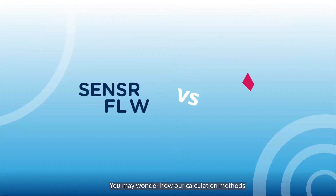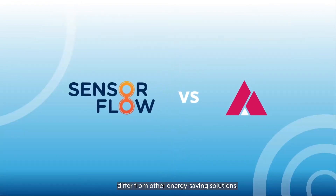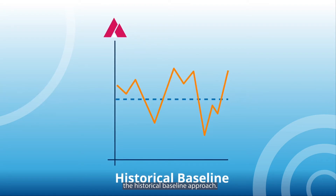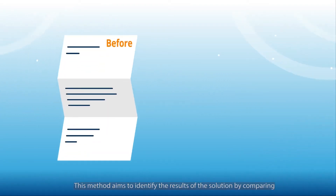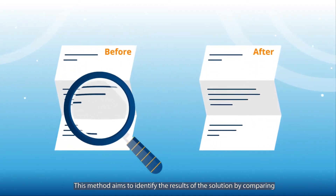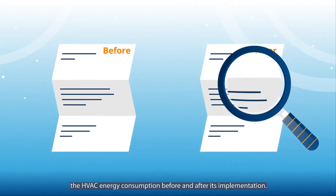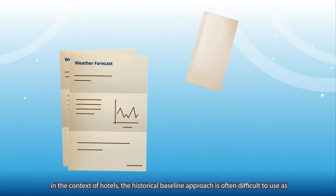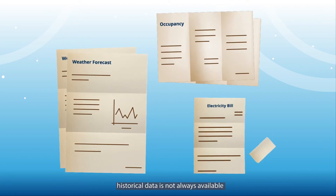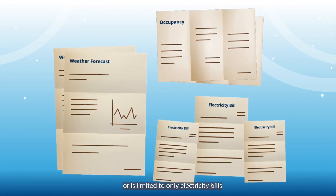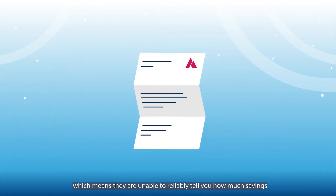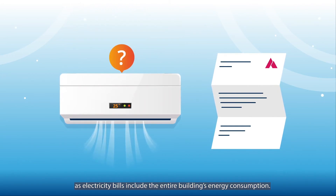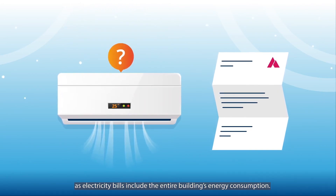You may wonder how our calculation methods differ from other energy saving solutions. Other occupancy-based energy management providers often use the historical baseline approach. This method aims to identify the results of the solution by comparing the HVAC energy consumption before and after its implementation. In the context of hotels, the historical baseline approach is often difficult to use as historical data is not always available or is limited to only electricity bills, which means they are unable to reliably tell you how much savings they have generated from only the guest room's HVAC system, as electricity bills include the entire building's energy consumption.